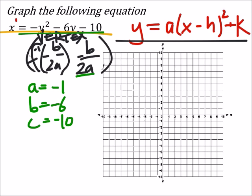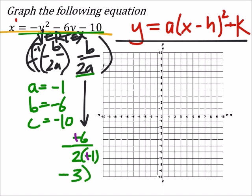So this becomes negative b — that's negative six — over 2a, which is two times negative one. We have two negatives that cancel, but there's still a negative in front, and six divided by two is three. So the vertex y-value is negative three.